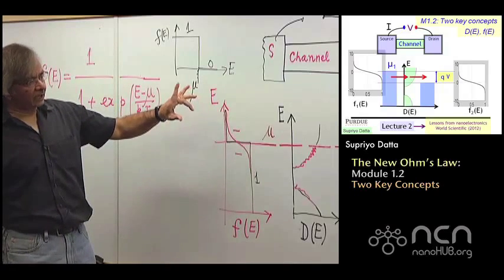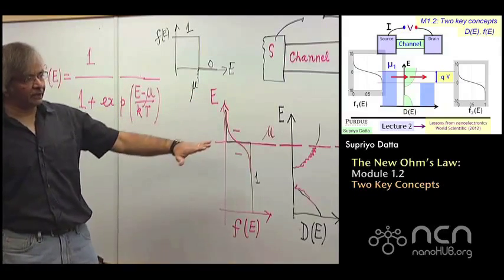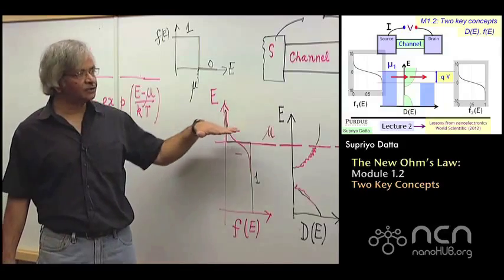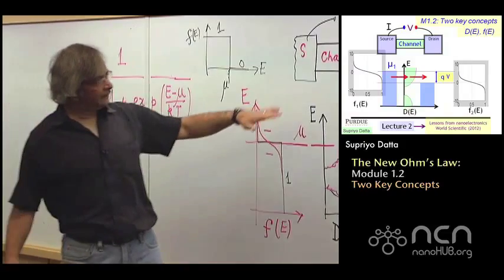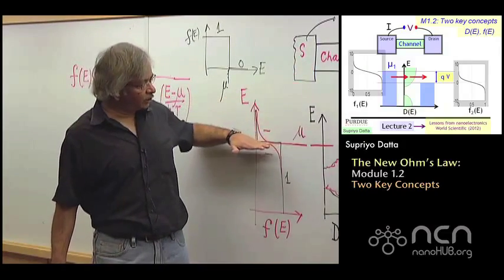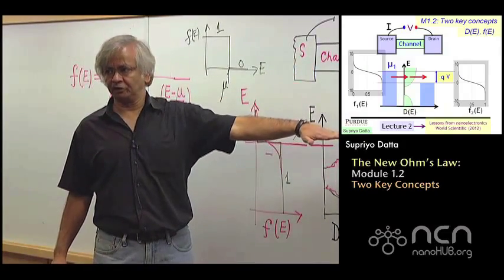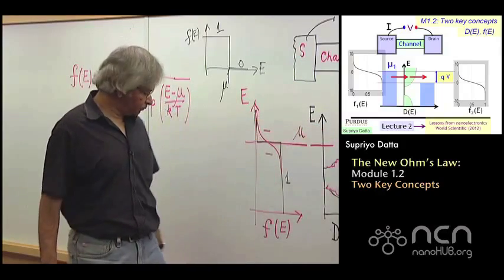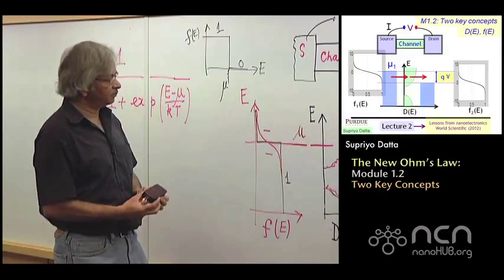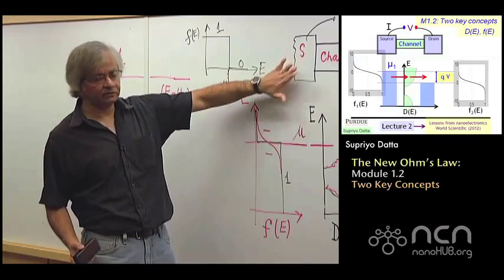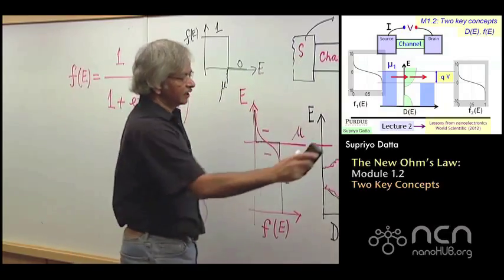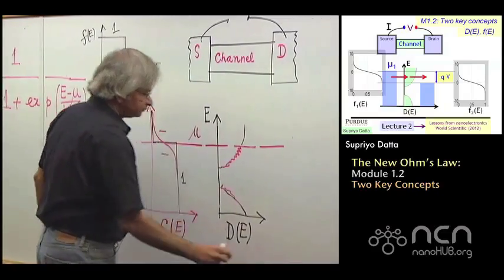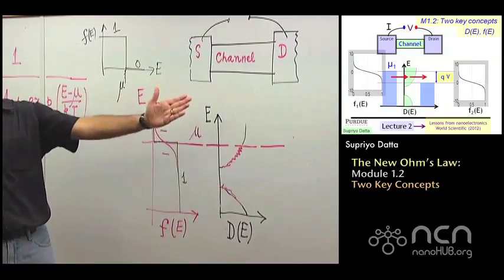Now, another additional point I want to make is that usually if this whole thing is in equilibrium, then you have a common electrochemical potential all the way. So, just as you have an electrochemical potential on the left contact, which tells you how far it is filled, there is a similar thing for the right contact. And at equilibrium, they are both the same.